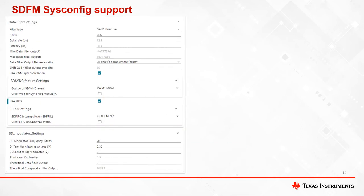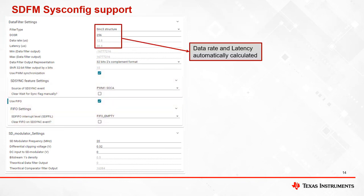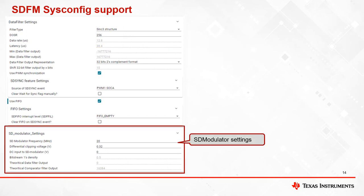Let's look at the configuration options available for the data filter within a filter channel. The data filter settings drop-down allows you to select its filter type, OSR, 32-bit or 16-bit data representation, sync source selection, and FIFO settings. Data rate and latency are automatically calculated for the selected filter type and OSR settings. SD modulator settings entered here are used to calculate the theoretical filter output for both the data filter and comparator filter.